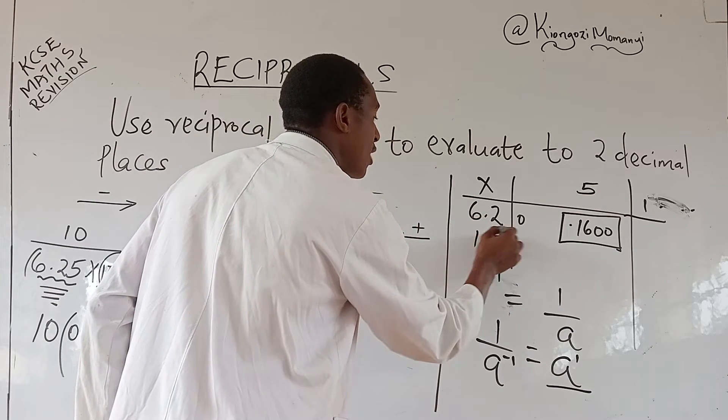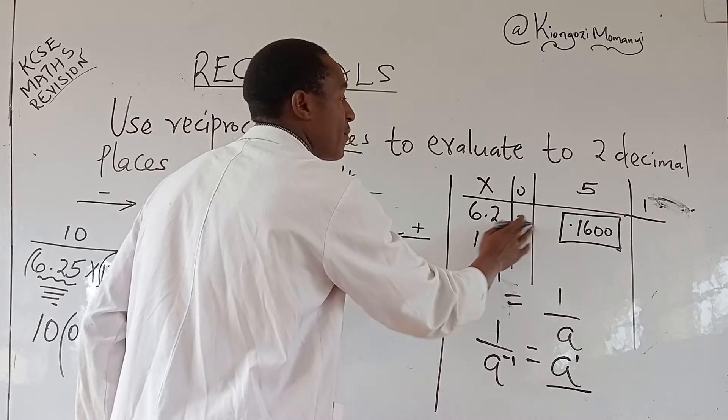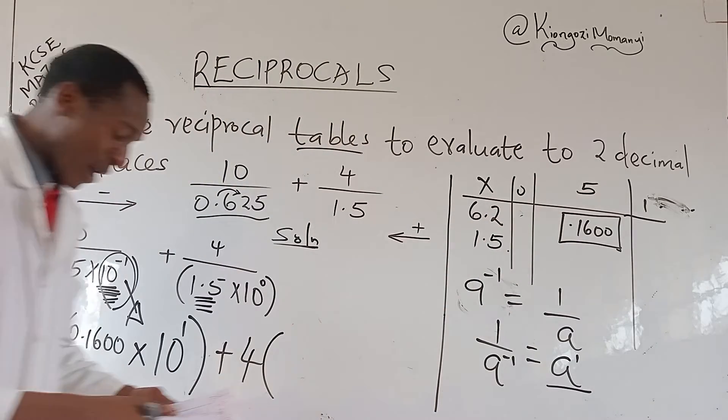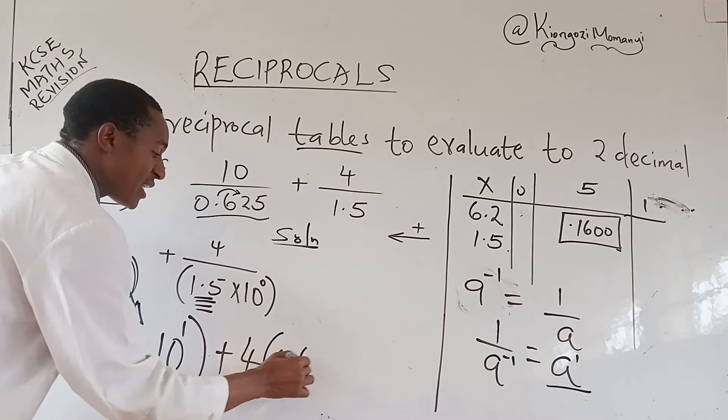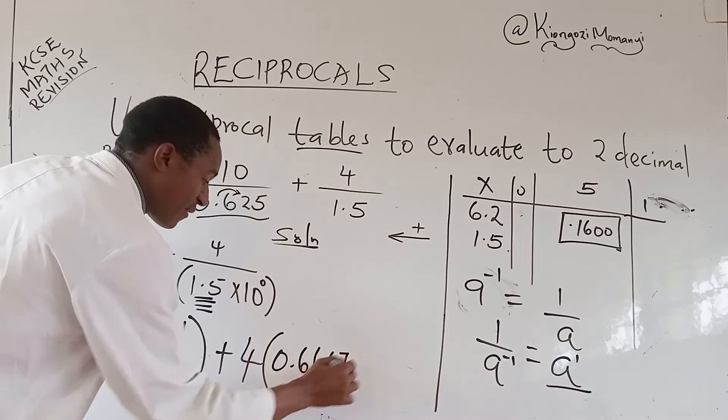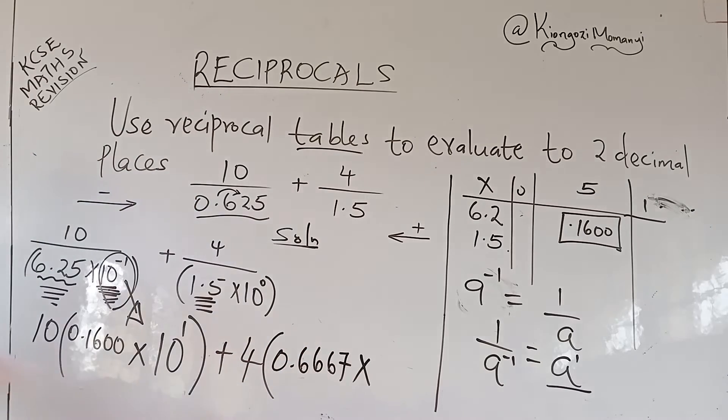Again, you go to the column of x. 1.5, that one will come immediately at 0. 1.5 in your reach, you will get 0.6667.